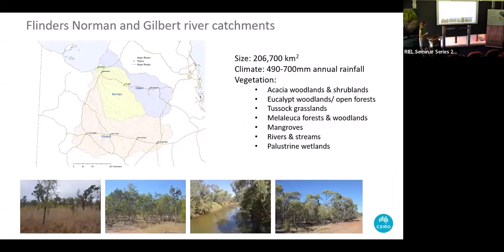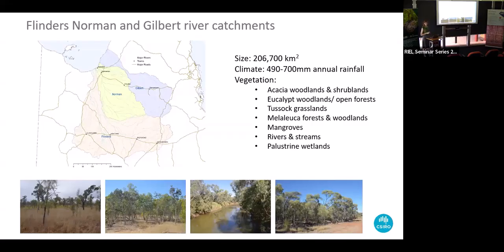The Flinders, Norman and Gilbert river catchments are in North Queensland, coming up to the Gulf of Carpentaria. The catchments together form an area of around 200,000 square kilometres. Rainfall changes from west to east from 490 to about 700 millimetres per year. There's a range of vegetation communities, including acacia woodlands and shrublands with lancewood and Gidgee acacias, eucalypt woodlands, big floodplain forests, Mitchell grass tussock grasslands, Melaleuca forests and woodlands, mangrove and salt marsh areas near Karumba, and some palustrine wetlands.